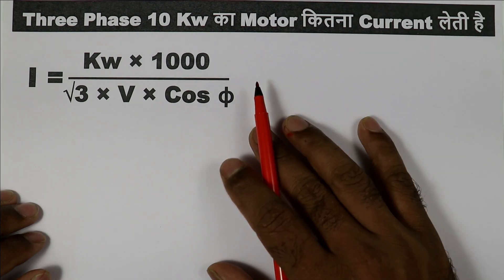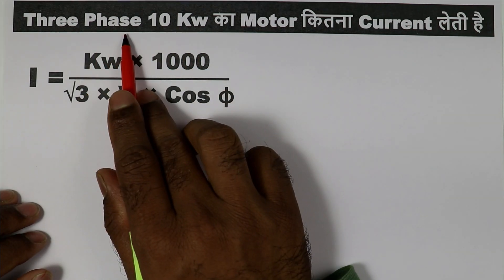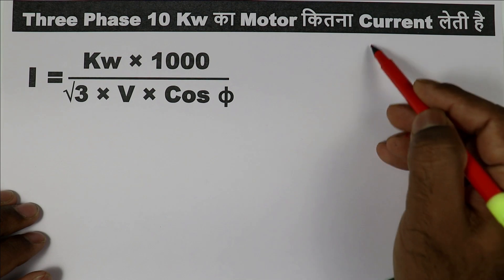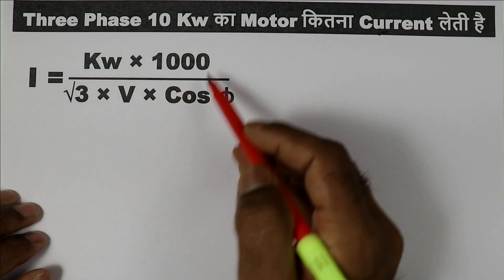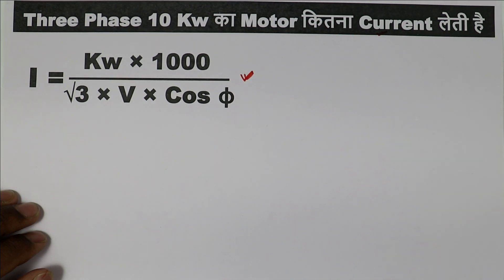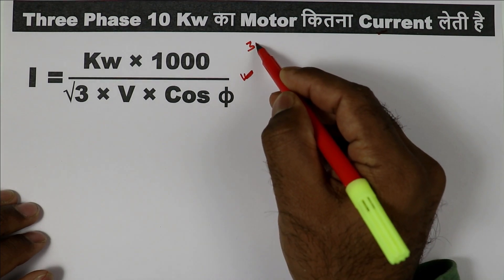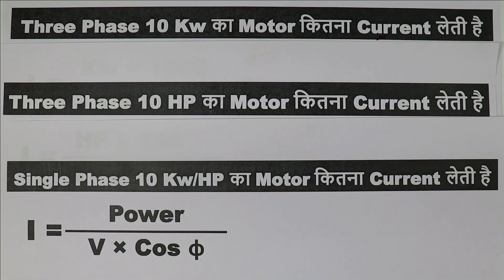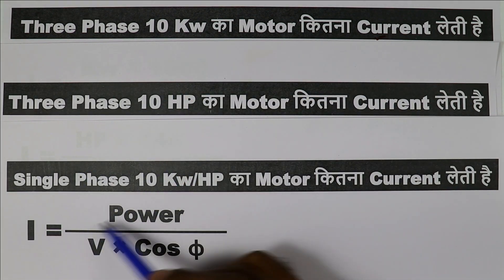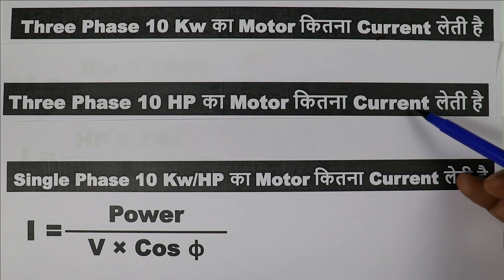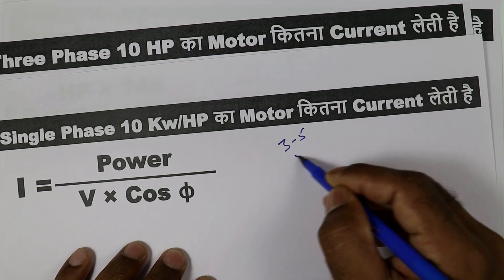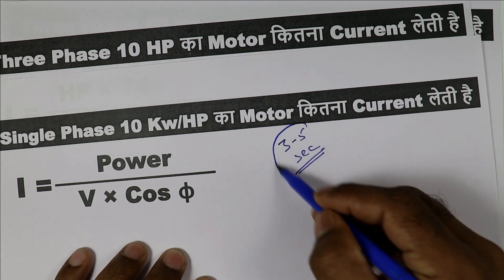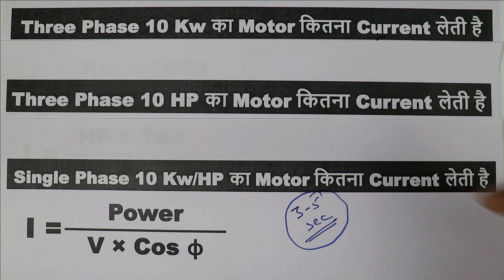Friends, in an interview, if it is asked that you have a 3-phase motor of 10kW, what is the current rating of this motor? To give the answer, you will use a formula, and if you do the whole calculation, you will take approximately 3 minutes. So today through this video, I will tell you the short trick to find out the current rating of 3-phase and single-phase motors — you will take just 3 to 5 seconds. Watch this video till the last.